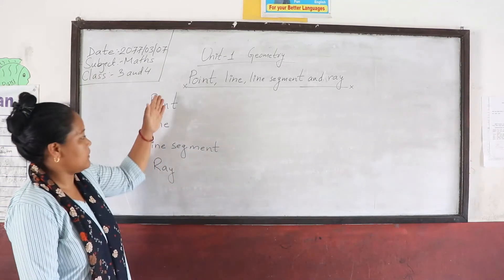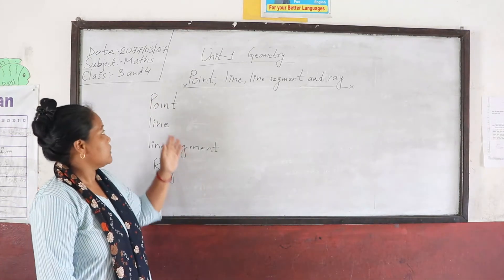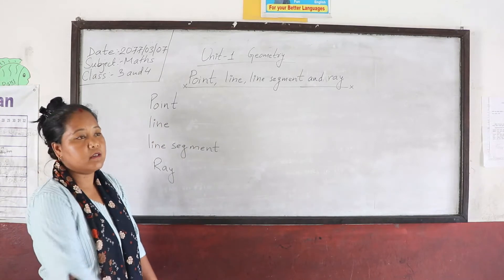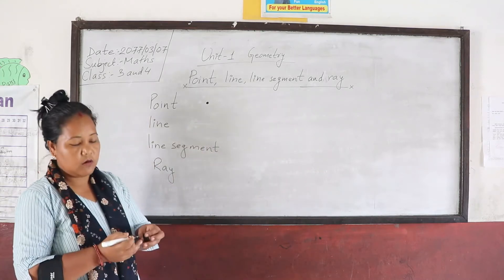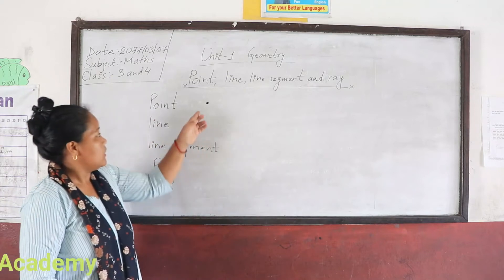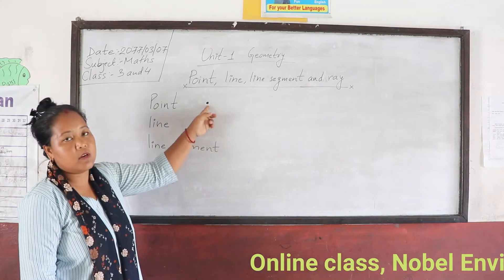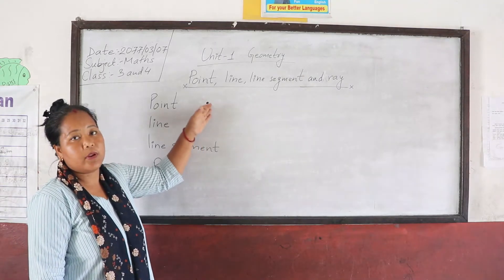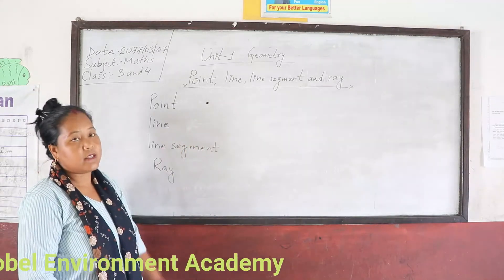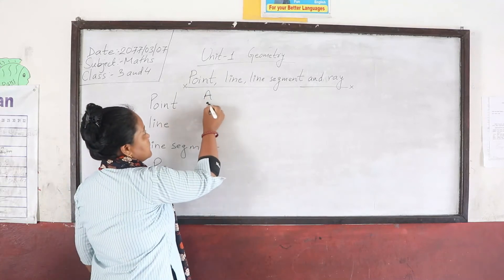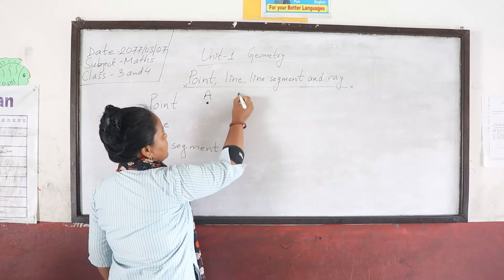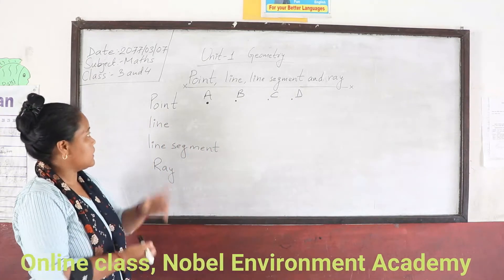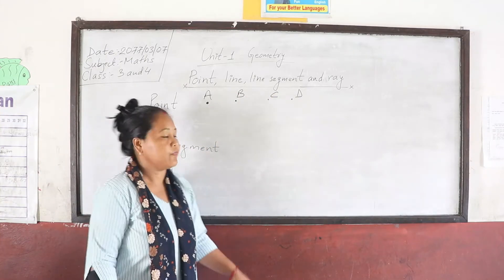These are the basic things we have to know first. What is a point? A point is represented by a dot. A point has no length, no breadth, and no height. Points are represented by capital letters — point A, point B, point C — always represented by capital letters.